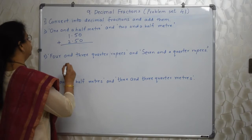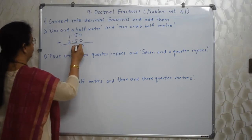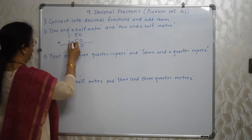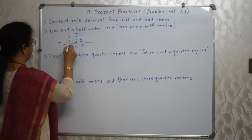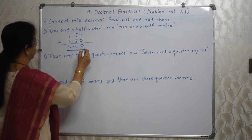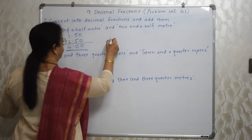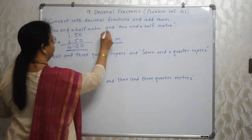So 1.50 plus 2.50. Now addition is very simple. 0, 0, 0. 5 plus 5, 10. One carry. Point ke niche point. 1 plus 1, 2. 2 plus 2, 4. 4.00 is the answer. Or 4 meters is the answer, because this is meter.